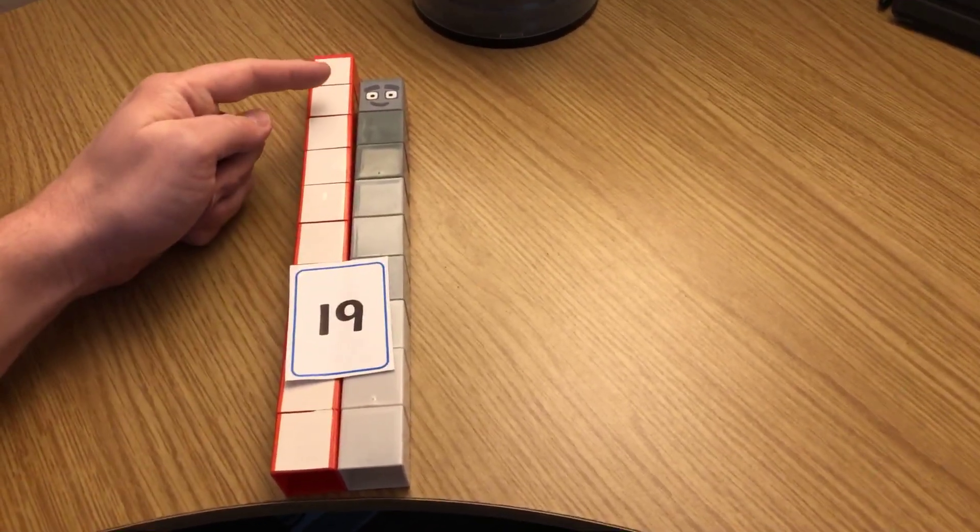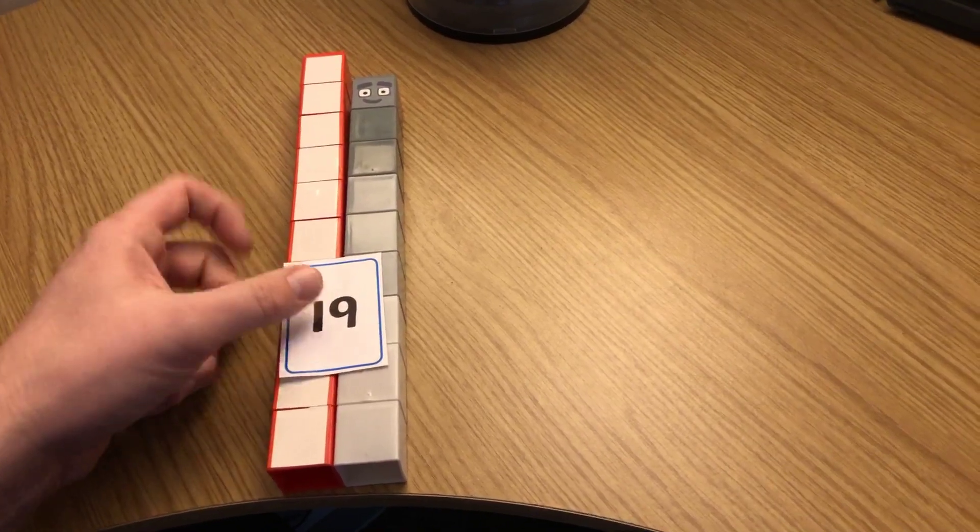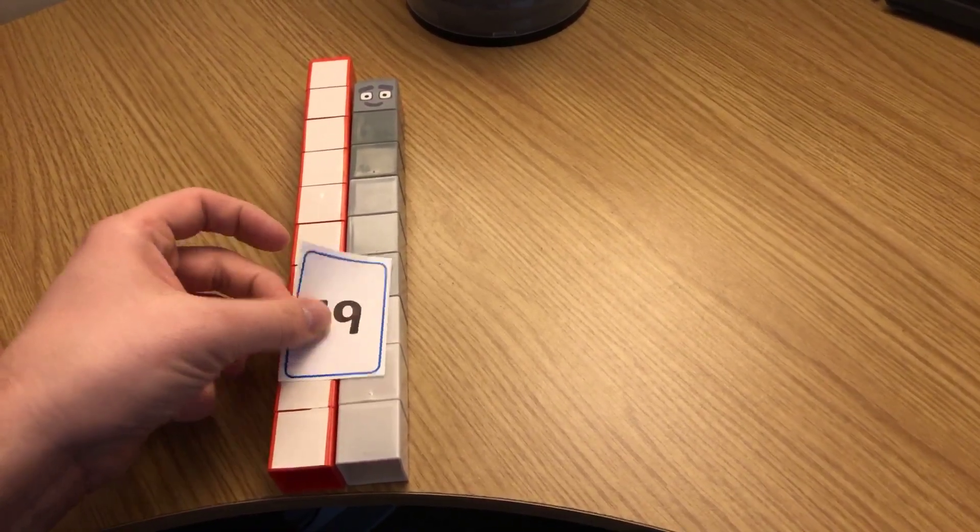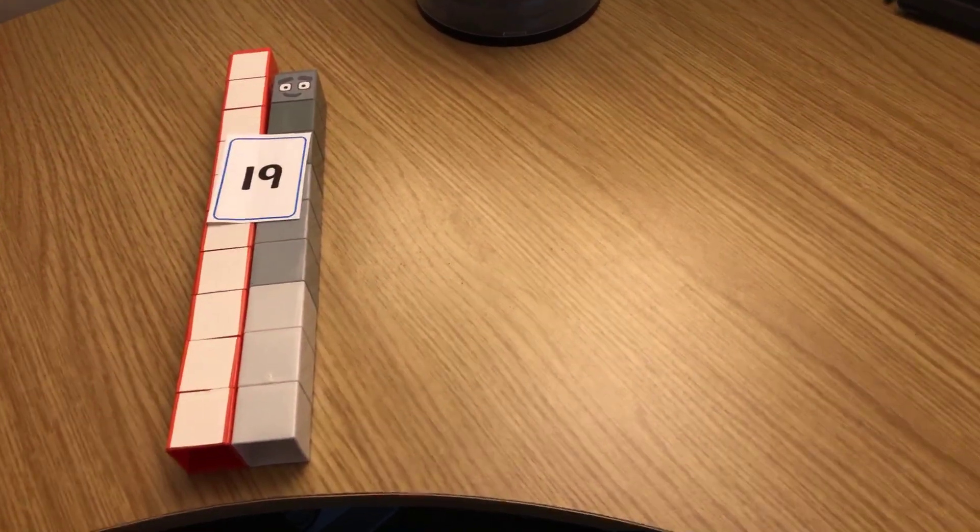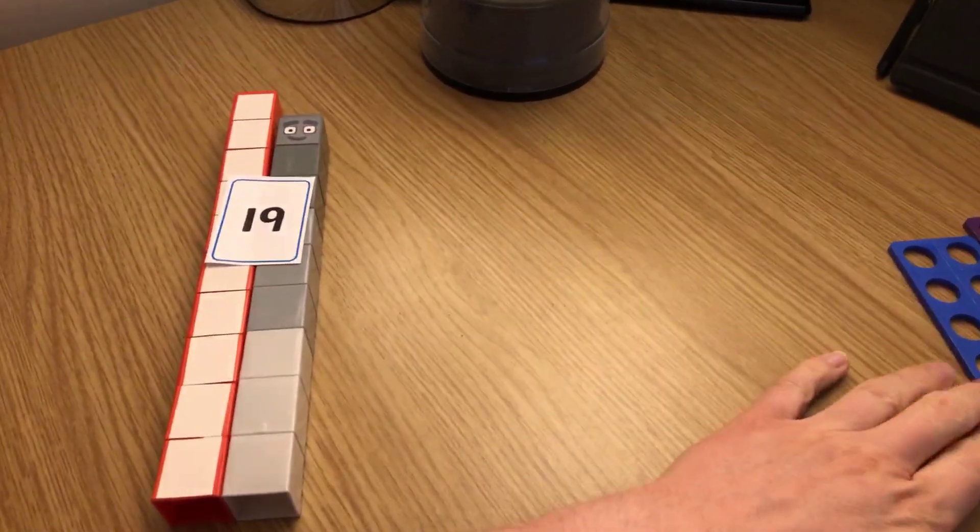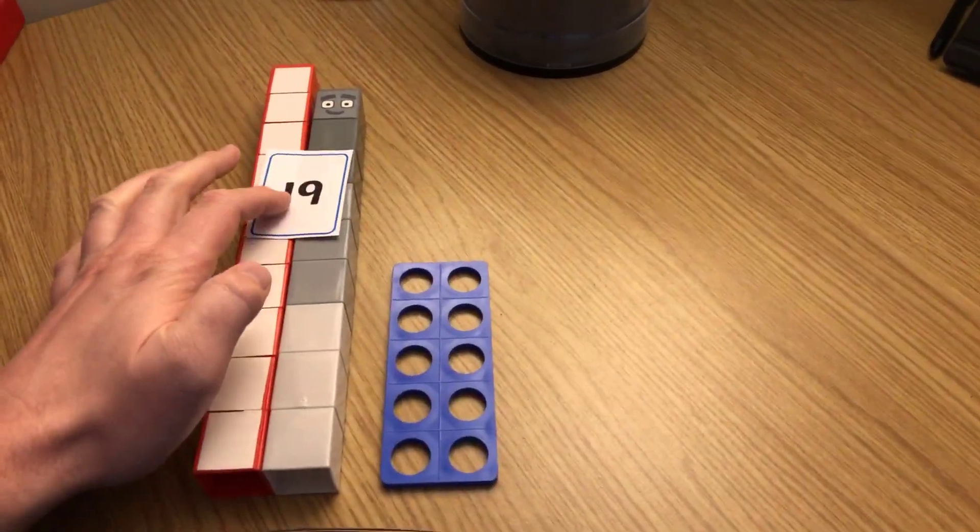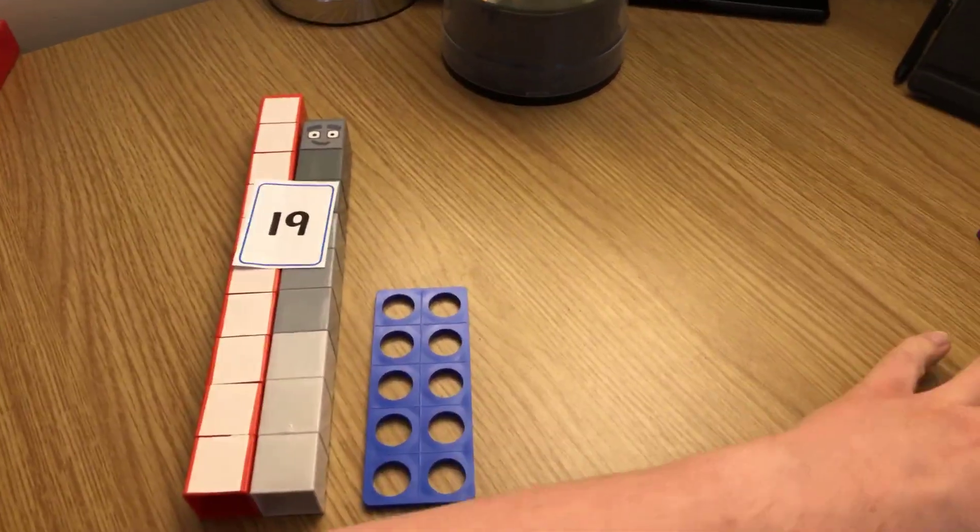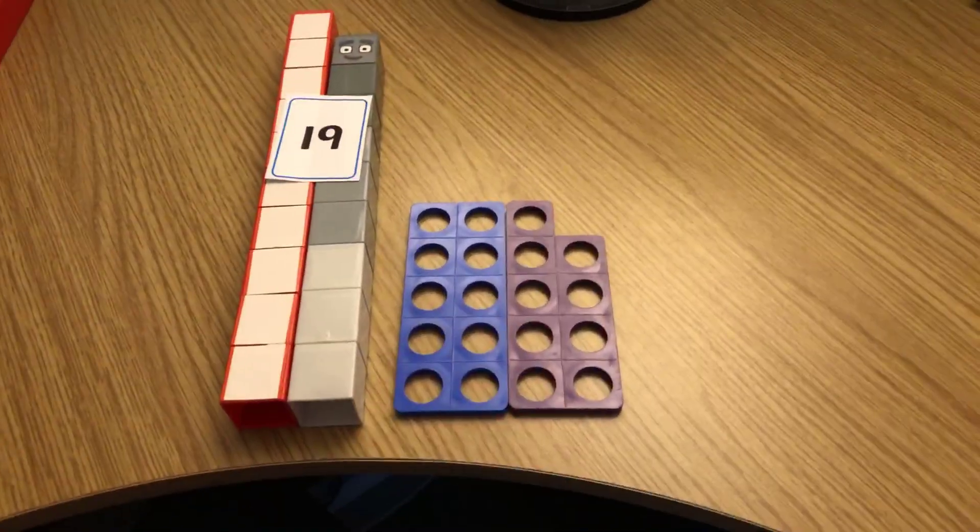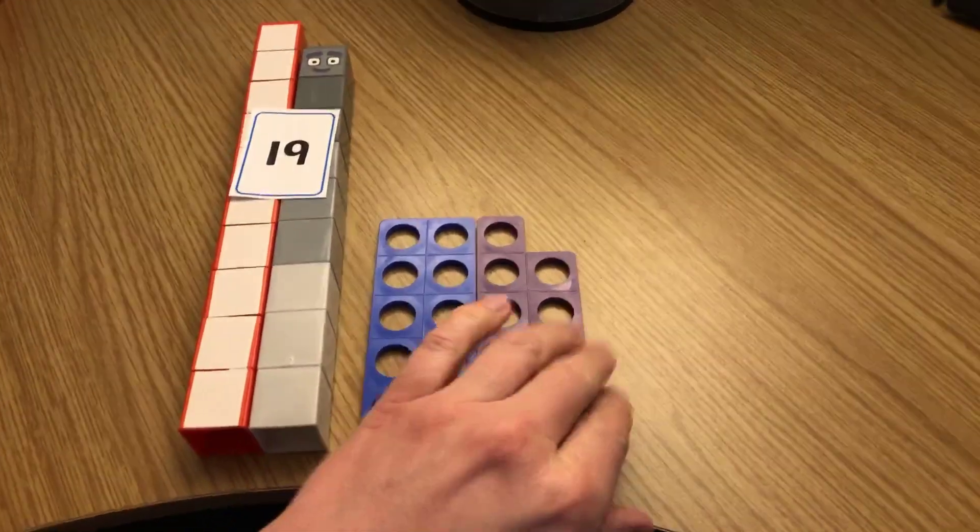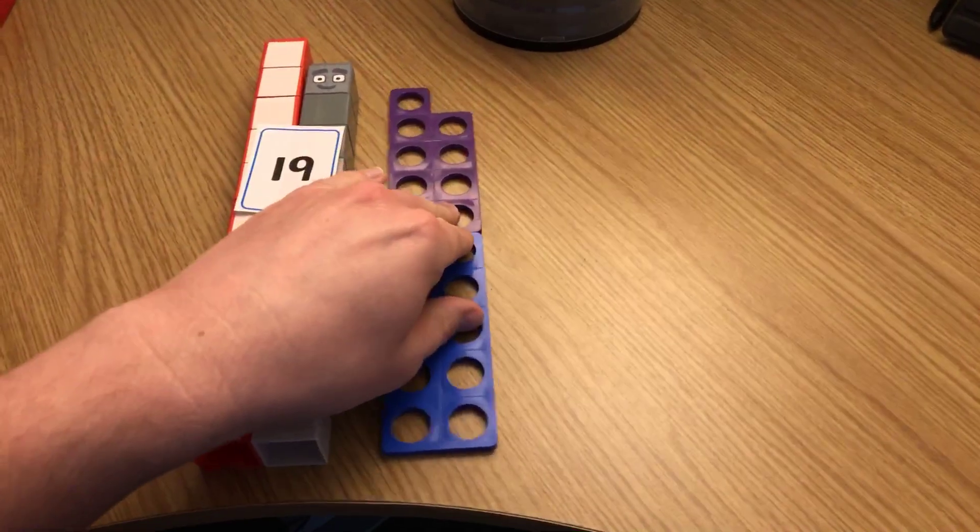Can you make it with the Numicon? Can you do that? See if you can do it, pause while you do that. And when you're ready, we need the 10, don't we? There's the 10 to go with that, and then we need the 9 for nine ones. So we've got 19 there, haven't we? Or put it on the top there. So 19 is 10 and 9.